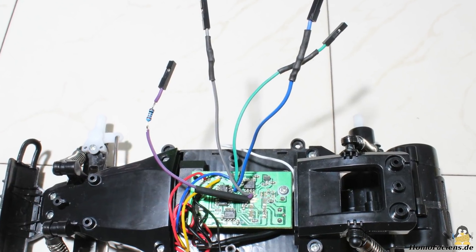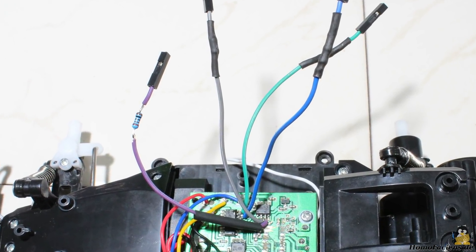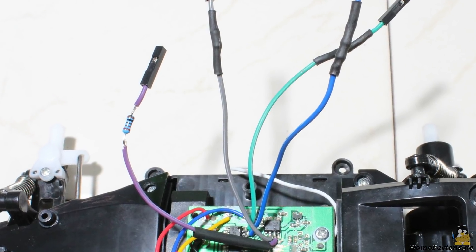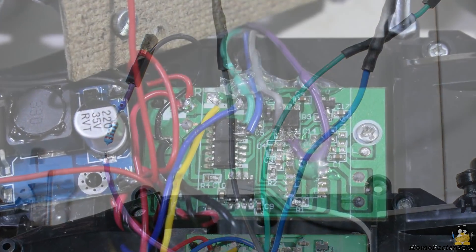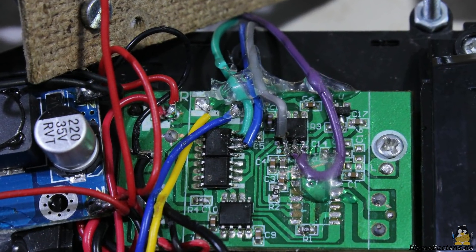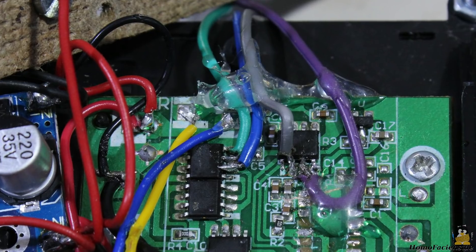I am using one kilo ohm resistors covered with shrinking tube to avoid damage of the Raspberry Pi in case something went wrong with the soldering work. Some hot glue keeps mechanical stress away from the soldering points.